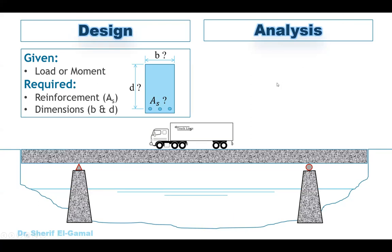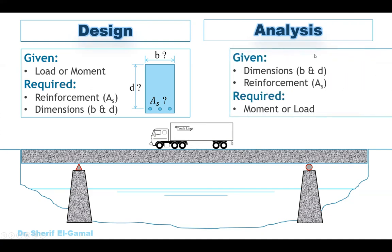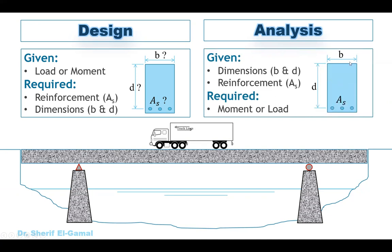The second option, which will be covered in this video, is analysis. Analysis means you have an existing structure where the dimensions are given and the area of steel is known, and you need to analyze it to get the capacity of that bridge — how much load can be carried by that bridge or how much weight of the truck can go through it. So in the analysis case, the given is the cross-section dimensions and the area of steel, and the required is the capacity of the cross-section.